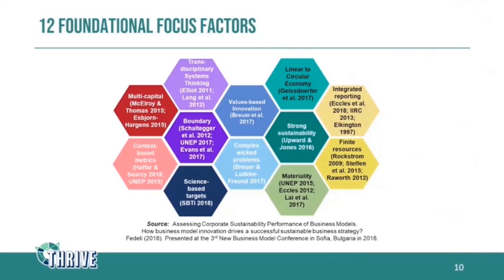The 12 foundational focus factors are shown here in these hexagons. In the bottom right yellow area we have finite resources — we recognize we live on a finite planet with finite resources. Going further, we look at materiality: what is important, what should we be measuring? Is a person's life important? It definitely is, and in the mining industry quite a few deaths occur — so what is an acceptable level? Perhaps zero. What is material to us: copper in the ground, water from a mountainside?